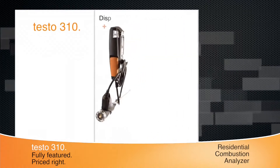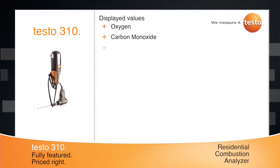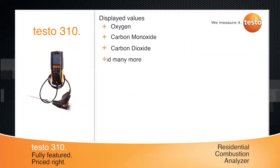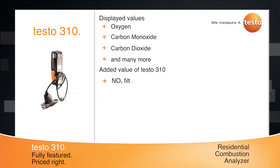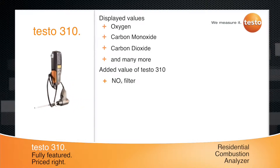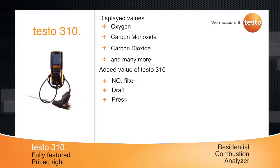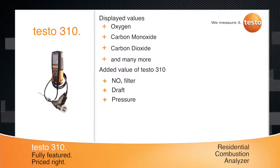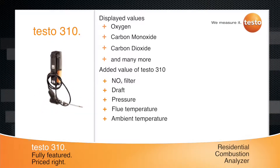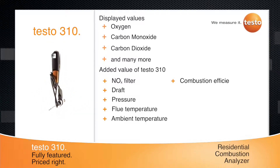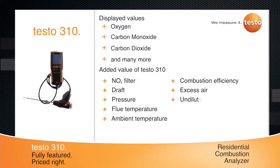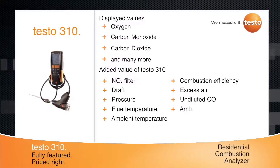This one instrument will display values for O2, CO with a NOx filter standard, and CO2. Unlike other residential combustion analyzers, the 310 can measure draft and pressure. It can also measure flue temperature, ambient temperature, combustion efficiency, excess air, undiluted CO, and ambient CO.